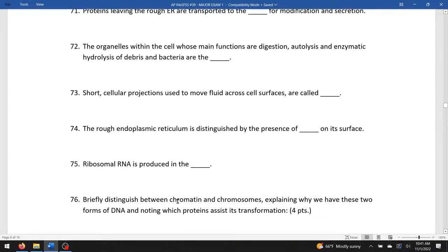Briefly distinguish between chromatin and chromosomes. Chromatin is an uncondensed, spaghettified form of DNA. It's opened, it's usable, it's readable. Chromosomes, however, are a closed-up, highly condensed form of DNA. It's the same DNA, but it's all packaged up, and the proteins which assist this transformation are called histones. You could say the usable form, chromatin, and the movable form, chromosomes.